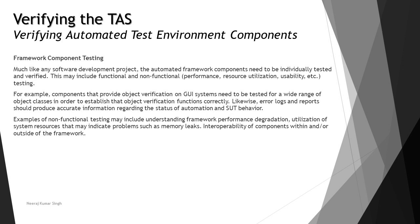This may include functional and non-functional parameters as well. For example, components that provide object verifications on a GUI system need to be tested for a wide range of object classes to establish that object verification functions correctly. Likewise, error logs and reports should produce accurate information regarding the status of the automation and SUT behavior. Further examples of non-functional testing include understanding framework performance degradation — after a certain point, the framework might slow down — along with system resource utilization that may indicate problems such as memory leaks or CPU utilization.